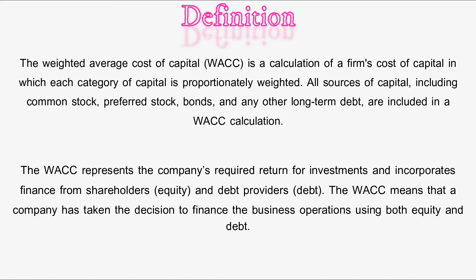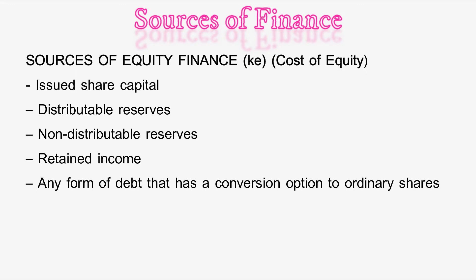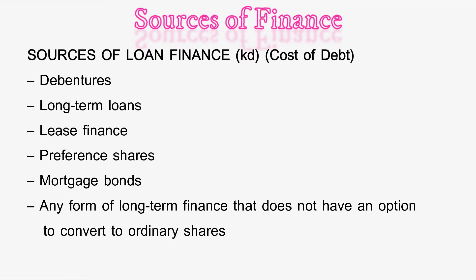The WACC means that a company has taken the decision to finance its business operations using both equity and debt sources of finance. Sources of equity finance — the cost of equity — include issued share capital, distributable reserves, non-distributable reserves, retained income, and any form of debt that has a conversion option to ordinary shares. Sources of loan finance — the cost of debt — include debentures, long-term loans, lease finance, preference shares, mortgage bonds, and any form of long-term finance that does not have an option to convert to ordinary shares.